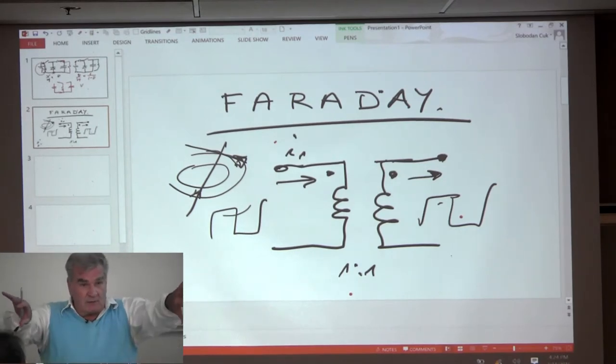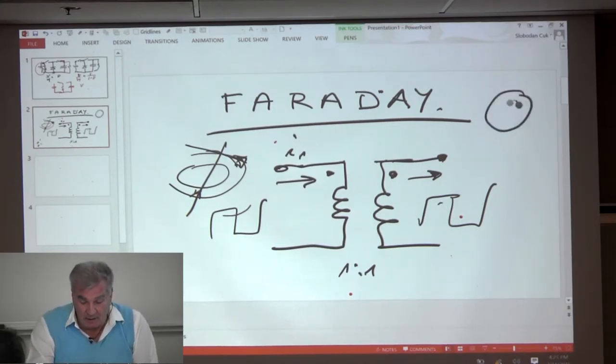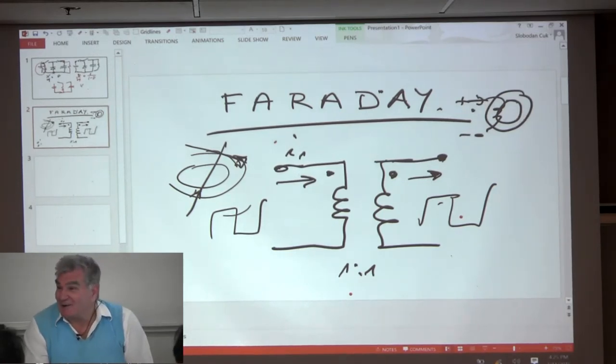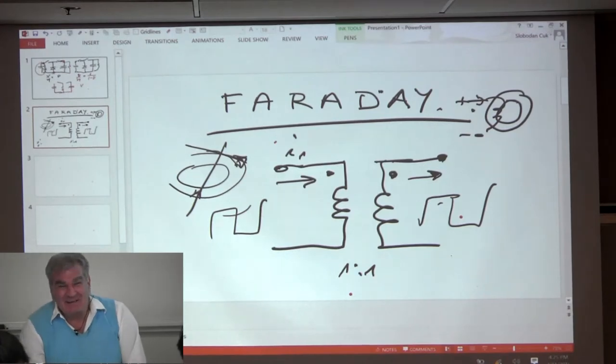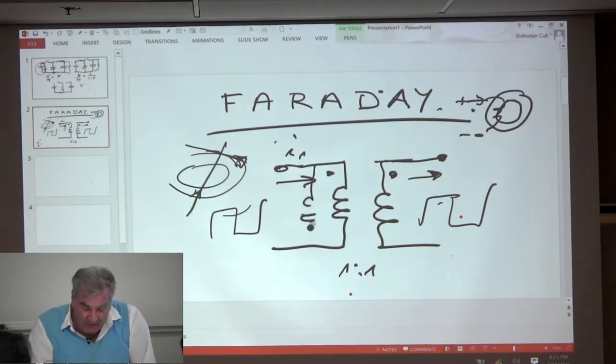Number two is galvanic property—isolates the primary or secondary side. And number three property is you can have a transformer like this—this is so-called ideal transformer. The real transformer is made of magnetic material, and that means if you put a voltage here and you measure the current, you make very little current because this inductance will be huge.